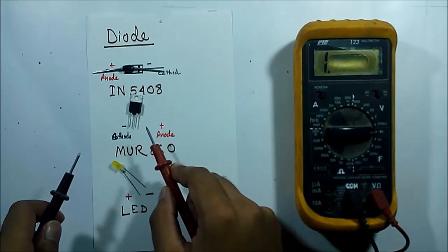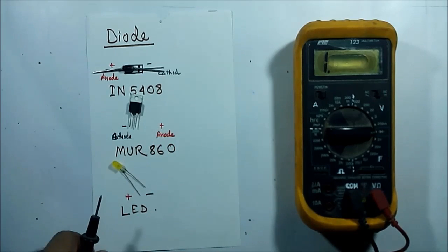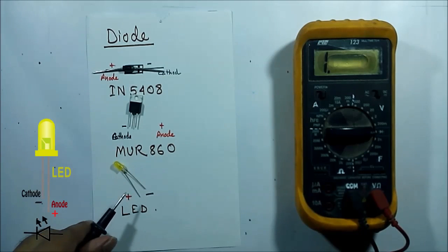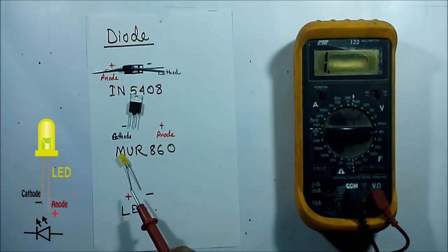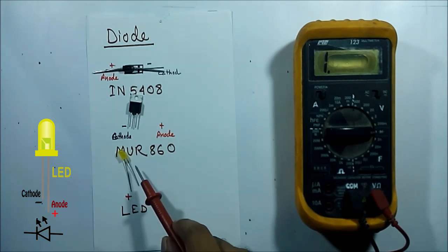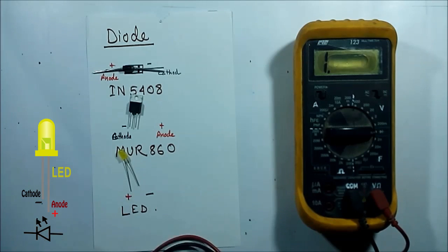Next I am going to measure this LED, which is a light emitting diode — also another type of diode. Looking at the LED, we can identify which terminal is positive and which is negative. The longer terminal is positive and the smaller in length terminal is negative, but we can also check it with the help of a digital multimeter.